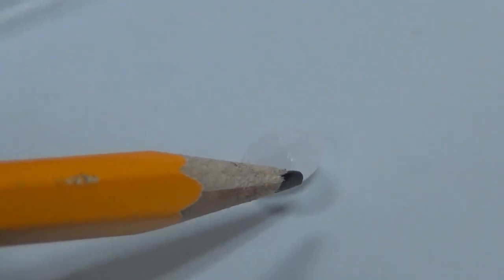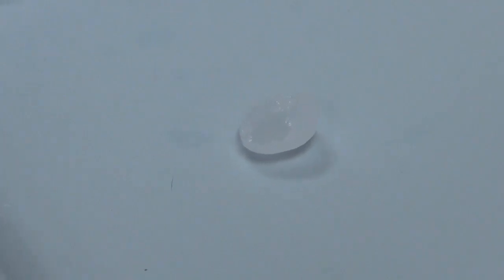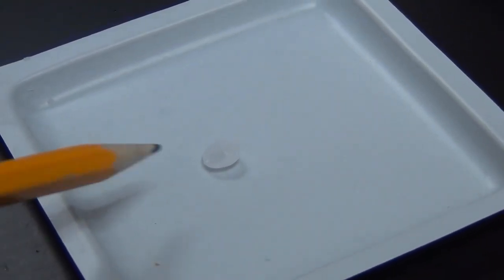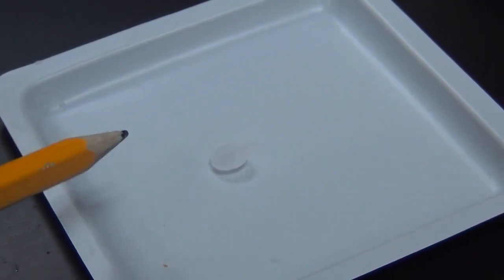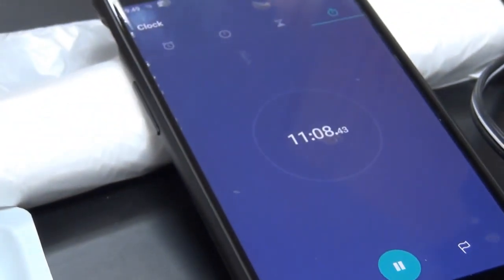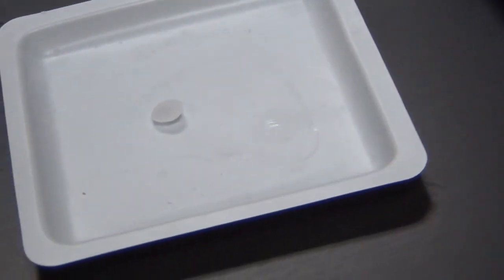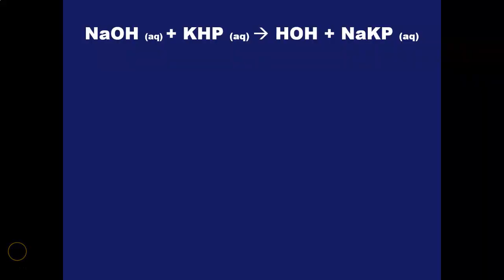The pellet is starting to get shiny because it has absorbed so much water vapor from the air that it's actually forming a tiny puddle of saturated sodium hydroxide solution. As it sits on the counter, it is gaining mass from the water it absorbs. In just 10 minutes it has gained enough mass to measure with a milligram balance. This shows why it's very difficult to get an accurate molarity for sodium hydroxide made from the solid.